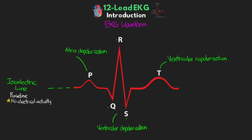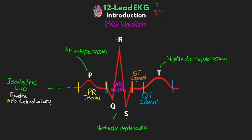From here we have certain intervals and segments that play an important role in getting measurements. The PR interval is measured from the start of the P wave to the start of the QRS complex, telling us the time from atrial depolarization until ventricular depolarization. The QRS width is measured from the beginning of the Q to the end of the S, telling us the time it took for the ventricle to depolarize. The QT interval is measured from the start of the QRS complex to the end of the T wave — the time for both ventricular depolarization and repolarization. Finally, the ST segment represents when the ventricles are depolarized with no electrical movement before repolarization, and it should sit along the isoelectric line.